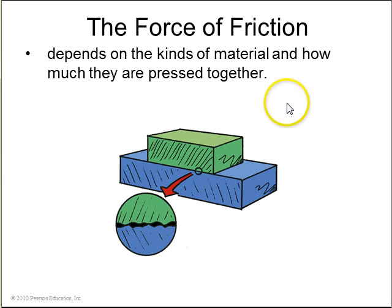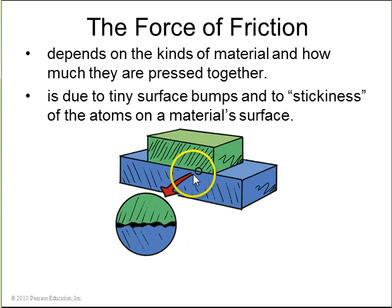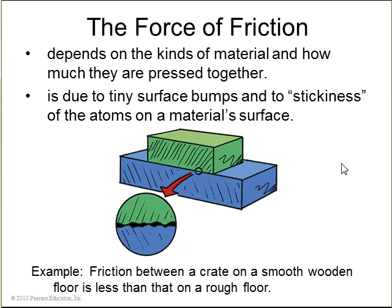Friction. Friction depends on the kinds of materials and how much they are pressed together. The cause of friction is that every surface, no matter how smooth it looks, has little bumps on it, and these bumps cause stickiness.